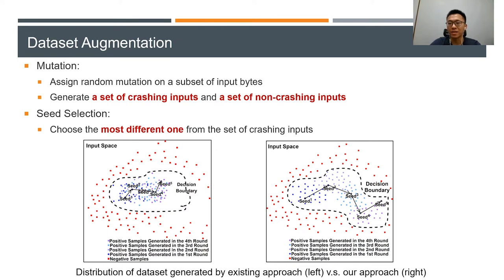The samples produced in the next round are more scattered in the sample space. The left-hand side shows the distribution when using existing approaches.